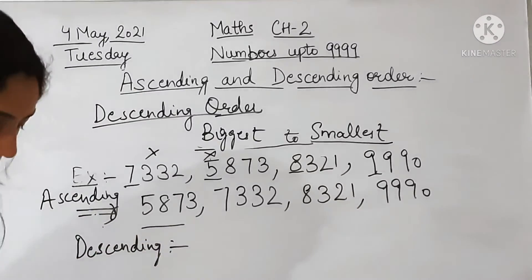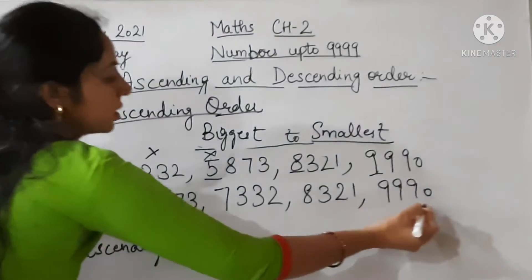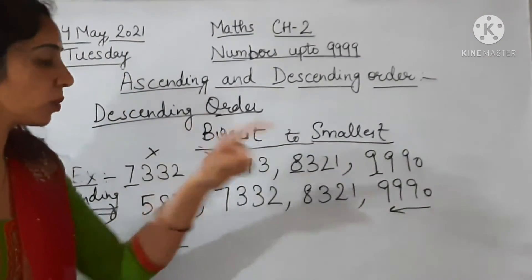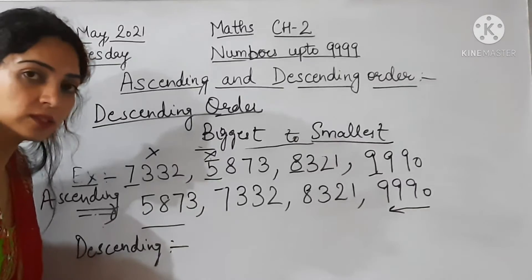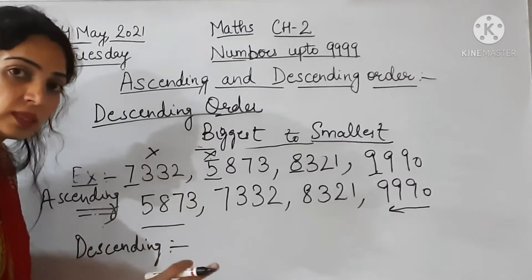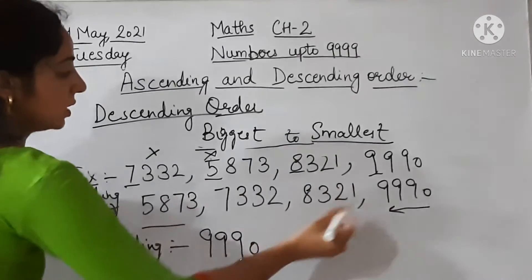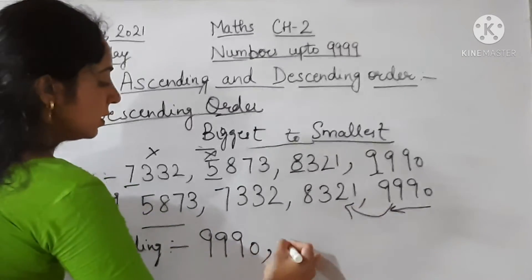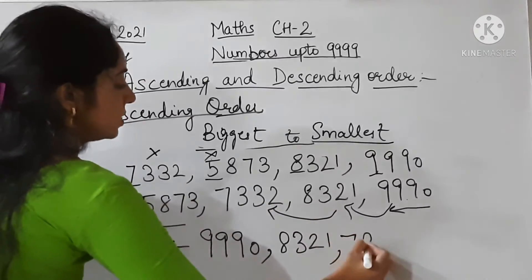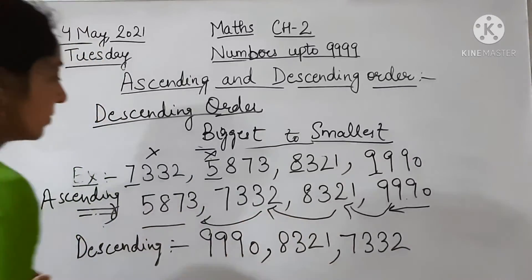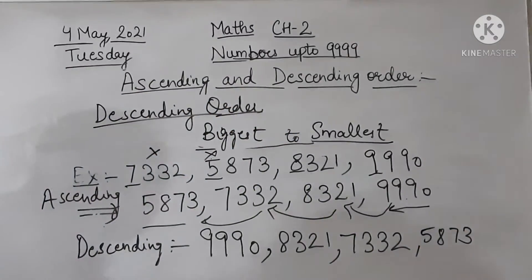When we write numbers from the back side of the ascending order — jo humne ascending order mein arrange kiya — agar hum usko ulta likhein, we get descending order. The last number in ascending was the biggest. So descending order starts from the biggest: first 9990, then 8321, then 7332, then 5873. This is our descending order.